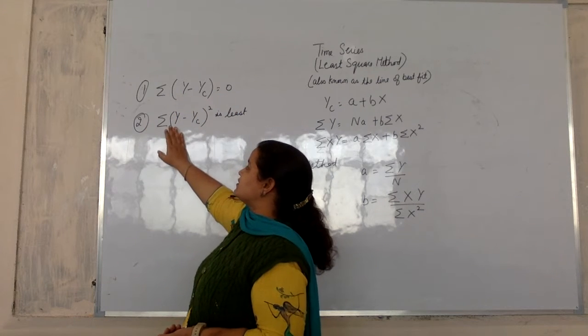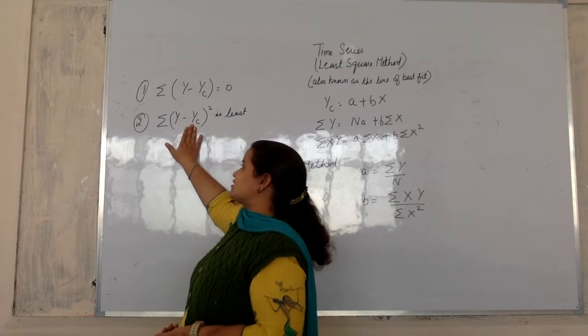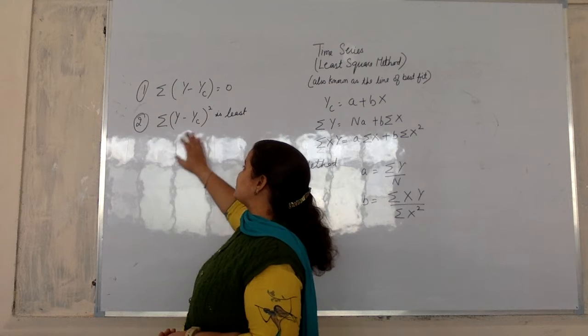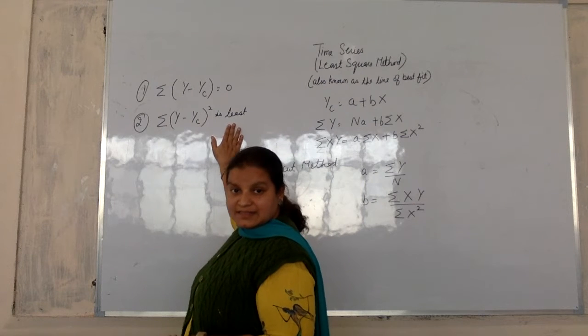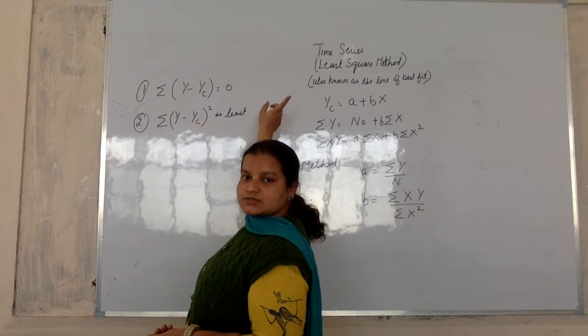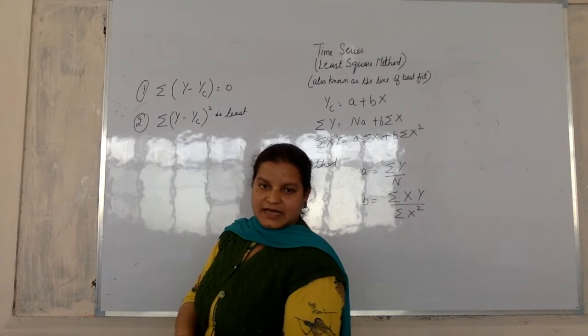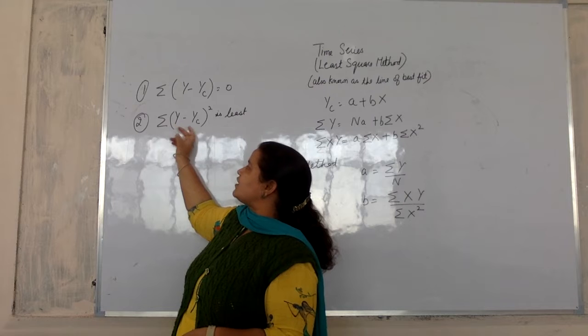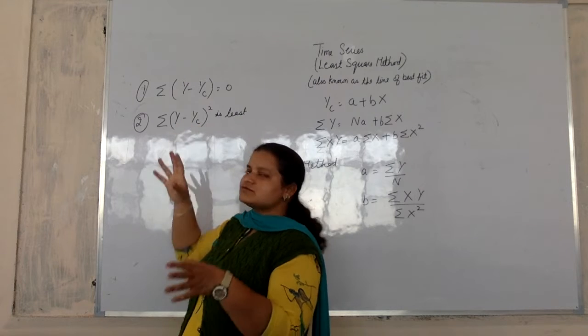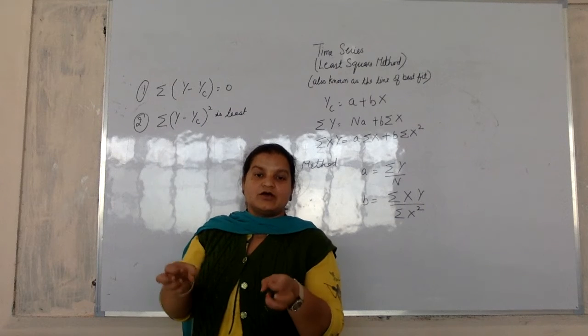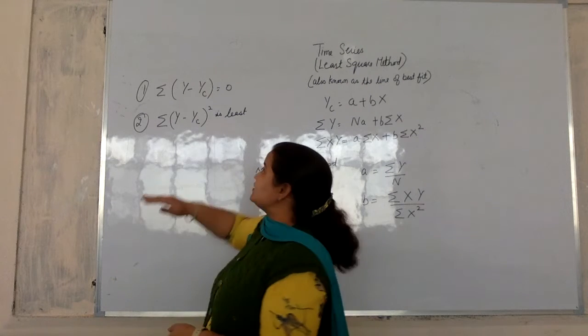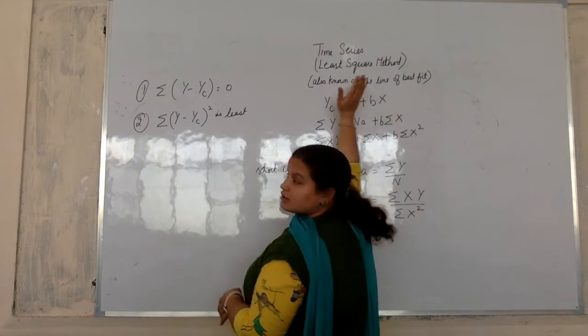And the second condition, that is the y minus yc squared, the summation should be least. That is the least square method. And all the moments of your terms is too realistic. From here you've got the fact that the error is minimized. So when error becomes minimized, you call it least square method.